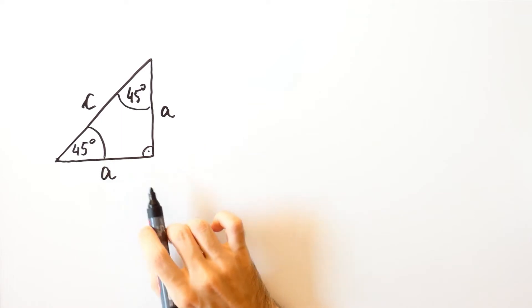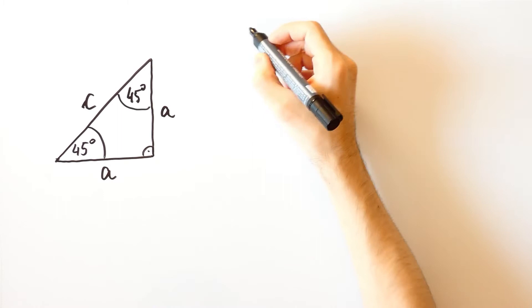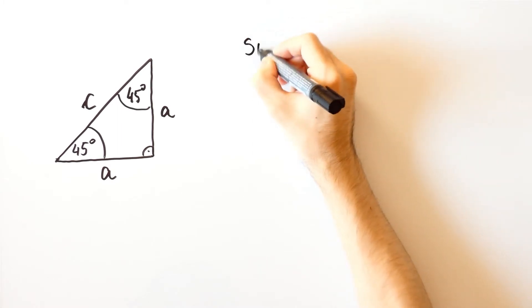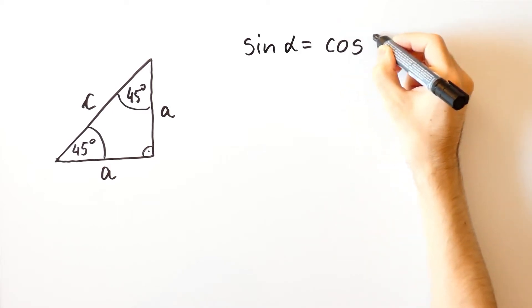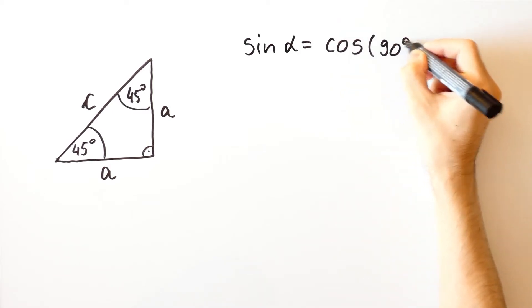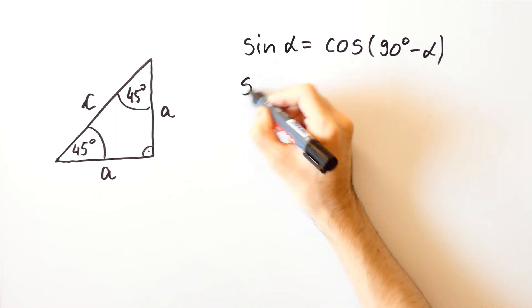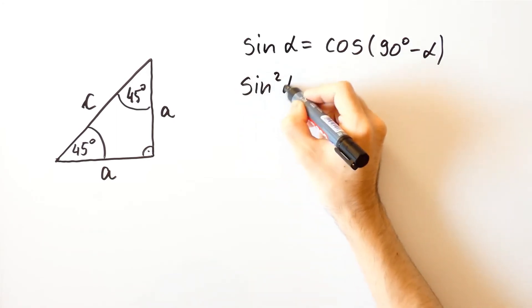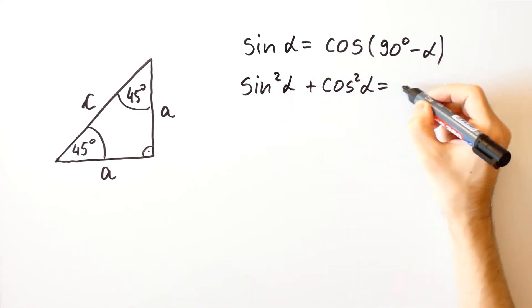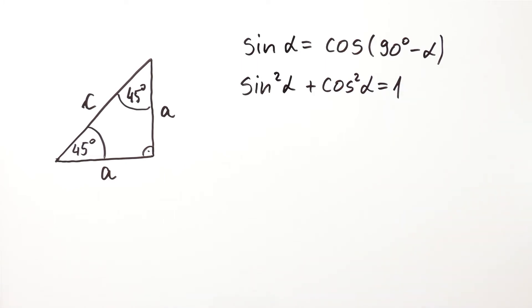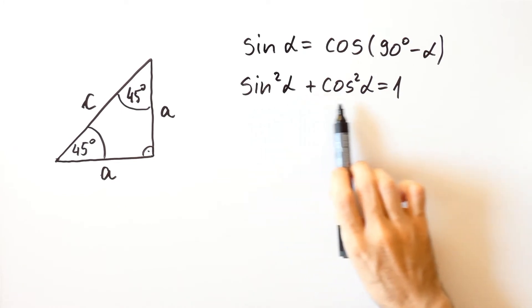However, in this case, we can do it in another way. We'll use the following two identities. The first identity is that the sine of alpha is equal to the cosine of 90 degrees minus alpha. The second identity is that sine squared of alpha plus cosine squared of alpha is equal to 1. These two identities are true for all angles alpha.